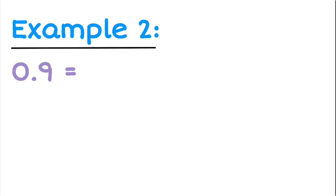If I had 0.9 as a decimal, and I want to convert that into a fraction, I've got to remember this is my first digit after the decimal, so this is in the tenths column. So that means when I write this as a fraction, I'm dividing by ten, and I'm going to have nine over ten.